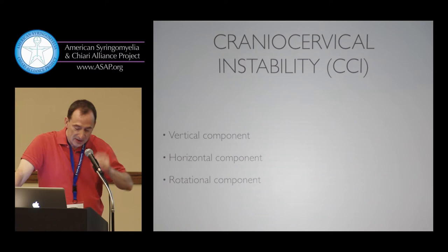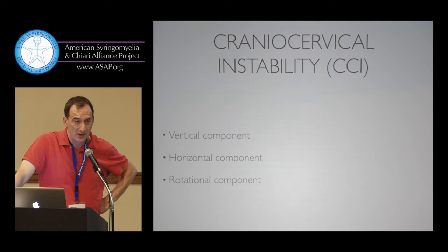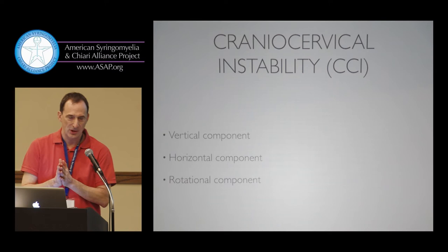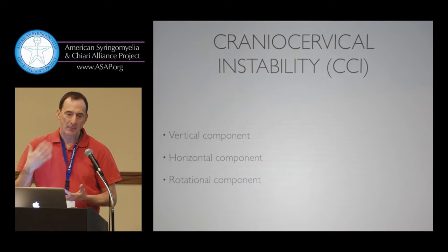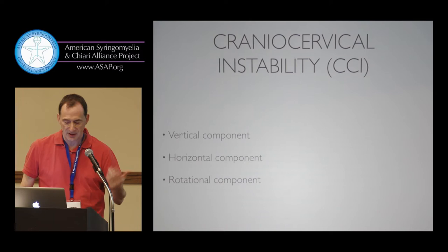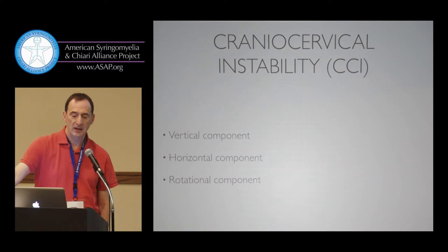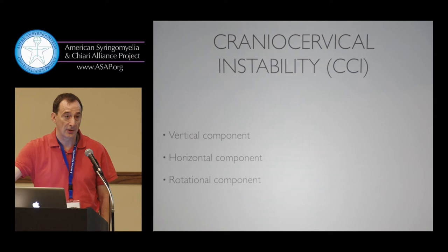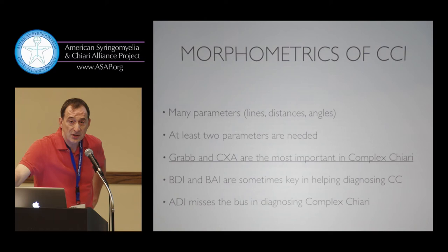The cranioservical instability has three directions: a vertical component, a horizontal component, and a rotational component. In standard neurosurgical training, we don't have so much of these nuances. The general neurosurgeon trained to use the ADI parameter remembers only the horizontal component — not the vertical, not the rotational. Hence the confusion when one neurosurgeon says there's nothing wrong with your cranioservical junction, and another says you are cranioservically unstable. They're both right — they're just using different glasses to look at the same structure.